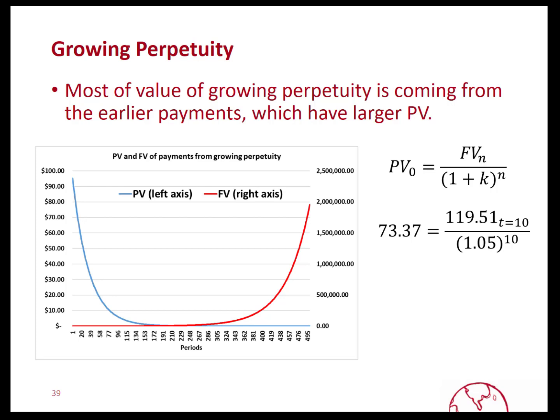Let's take the payment received in the 10th year. By year 10, the payment is going to be roughly $120. You discount it at 5% for 10 years and in today's dollars it will be worth $73.37 — meaning if you invested $73.37 today at 5% compounded annually for 10 years, it would grow to be worth $119.51. Now let's take the 50th payment, which is going to be $263.88 having grown by 2% each year. If you discount that $263 over 50 periods, it is only worth $23 today. If you invest $23 today at 5% compounded annually and hold it for 50 years, it would grow to be worth $263.